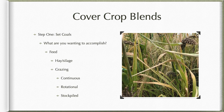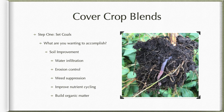The first step is setting goals. What are you trying to accomplish by using these cover crops? Is it a feed issue — silage, hay, or grazing? If grazing, how are you managing it: continuously, rotation grazing, or stockpile? What kind of animals? If you're looking at soil improvement, are you addressing water infiltration, erosion control, weed suppression, improved nutrient cycling, or building organic matter? All of those are going to influence what species we want to use.